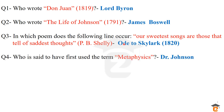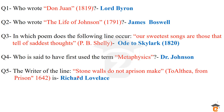Question number 4: who is said to have the first use of the term 'metaphysical'? The answer is Dr. Samuel Johnson — he was the first person to use the term metaphysical. Question number 5: the writer of the line 'Stone walls do not a prison make' — this line was taken from the poem To Althea from Prison, which was published in 1642, and it was composed by Richard Lovelace.